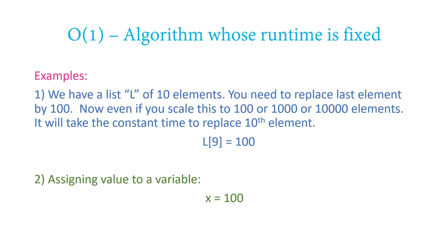Let me give you some examples to clarify. Suppose we have a list of 10 elements and you need to replace the 10th element with 100. In Python you write L[9] = 100. Now, even if you scale the input size to 100, 1,000, or 10,000 elements, it will take constant time to replace that 10th element. This is an example of order of 1.